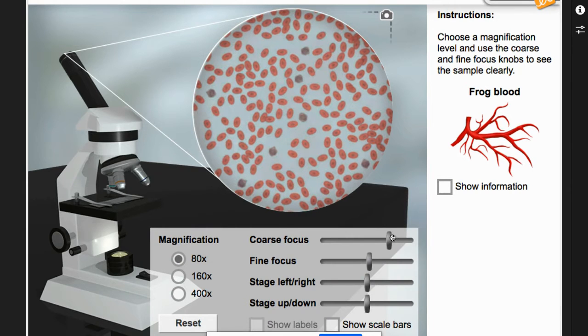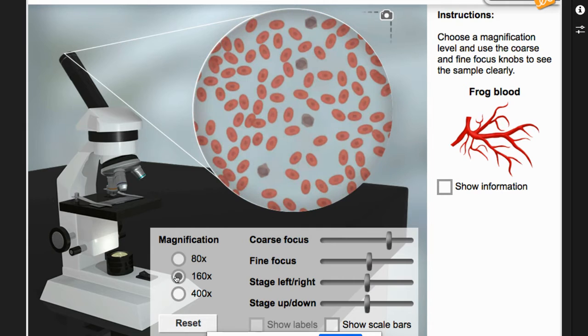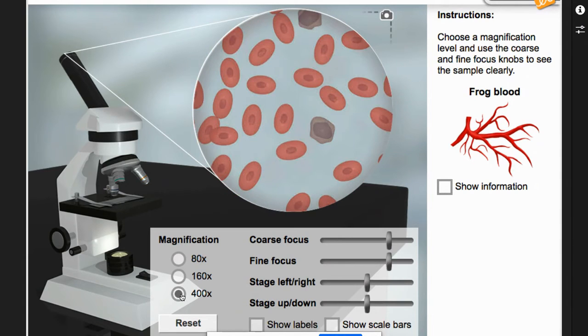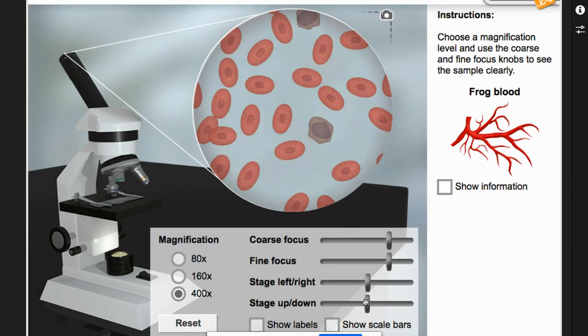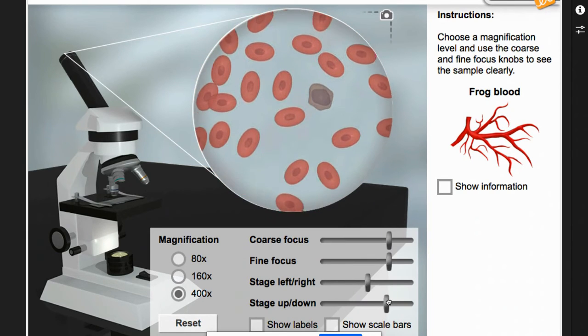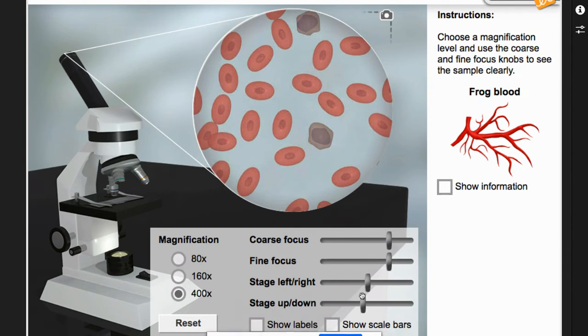Then to get it even closer, you're going to click on the 160x. Then you are going to start doing the fine focus. Oh, that looks—oh no, there we go. And then for the 400x—oh my gosh, there you go. You can move your stage up and down to see what's all around. Okay, so once you get a nice clear picture...